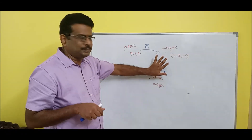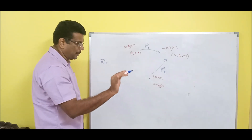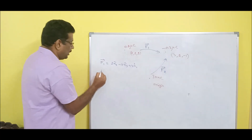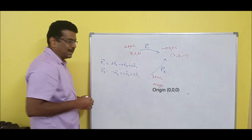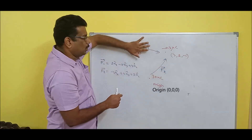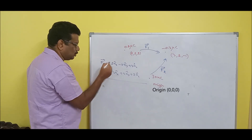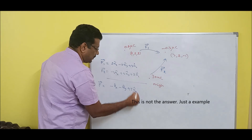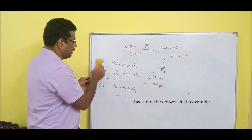This is one problem — get the answer for F1. This is another problem — get the answer for F2. Here is one suggestion: if F1 vector equals, for example, 2 ax − 5 ay + 3 az, and F2 equals −3 ax + 4 ay + 2 az, then the final answer F = F1 + F2. Just add individually: x with x (2−3 = −1 ax), y with y (−5+4 = −1 ay), z with z (3+2 = 5 az). Write F1 separately, F2 separately, then add them. That is the tip.